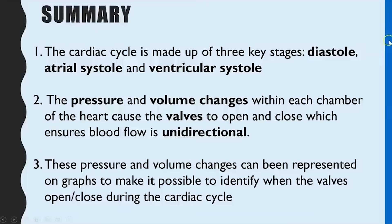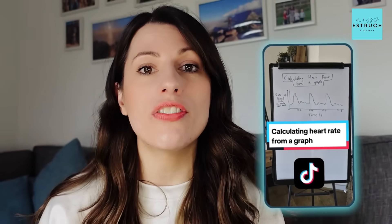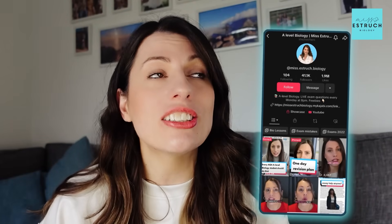In summary, the cardiac cycle is made up of three stages: diastole, atrial systole, and ventricular systole. The pressure and volume changes within each chamber control the opening and closing of valves, ensuring unidirectional blood flow. These changes can be represented on a graph so you can identify when valves are open or closed. Now I'm going to show you a worked exam question on a cardiac cycle graph.